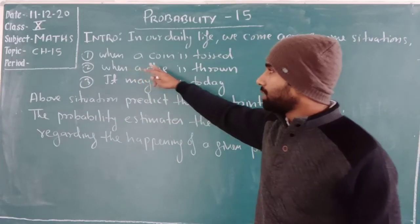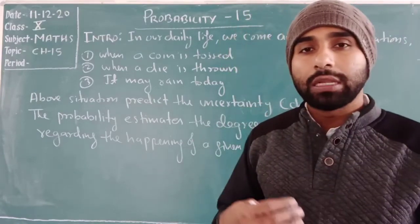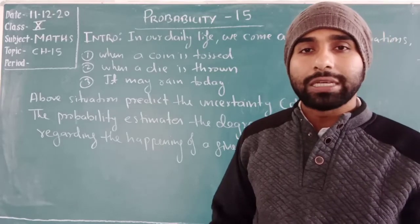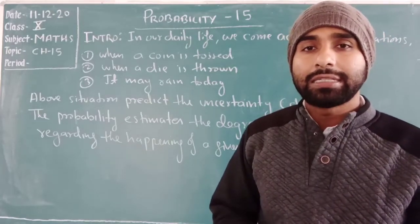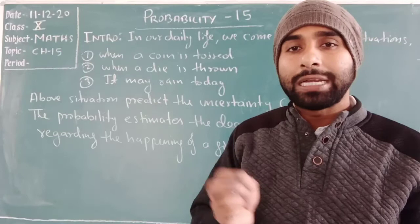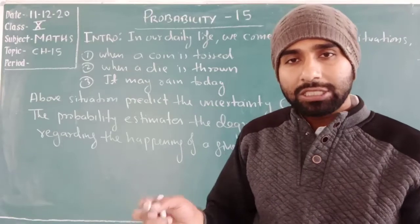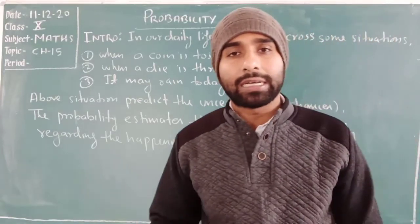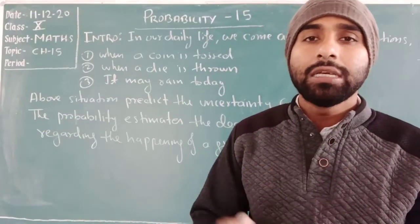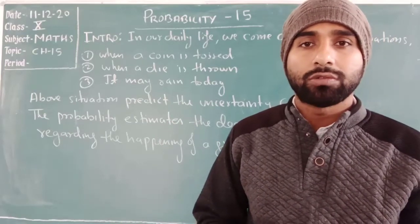The first example is: when a coin is tossed, what will happen? So definitely your answer should be, sir, we can get head — either head or tail. It means you are predicting. You can tell this as a chance. It means you cannot tell confirmly that you will get head when you toss a coin.